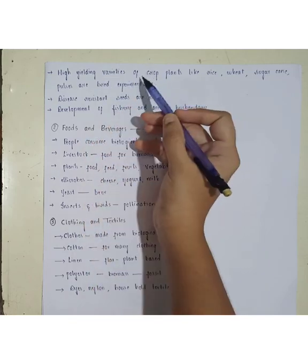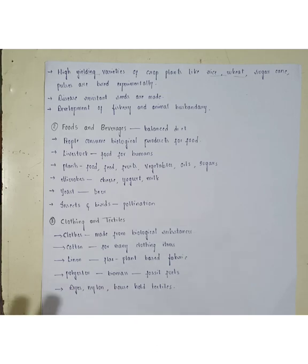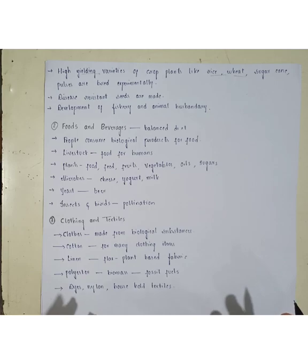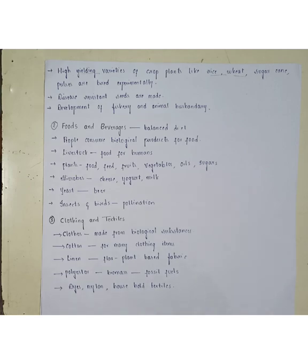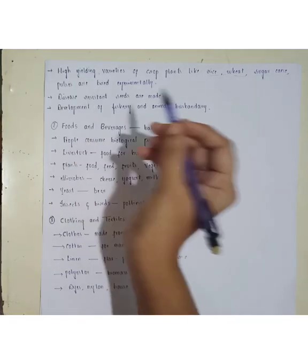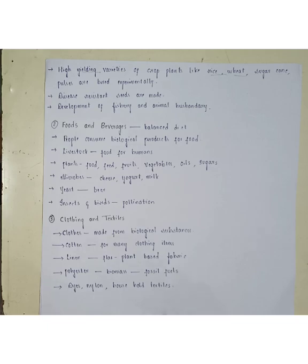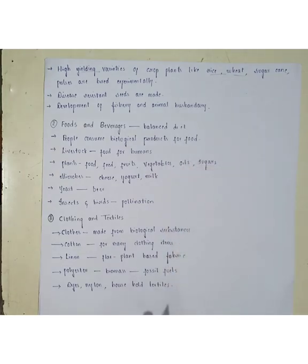High-yielding varieties of crop plants like rice, wheat, and sugarcane are bred experimentally. In general, plants produce certain amounts of crops, but if we need more food, we can develop high-yielding crops by changing the genes in those plants. Disease-resistant seeds can be developed to protect plants from pathogens that attack seeds. Development of fishery and animal husbandry is also important — human beings depend not only on plants but also on fishes, cattle, and buffaloes for meat and milk, and by developing those fields we can increase food production.